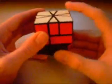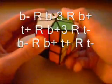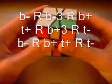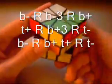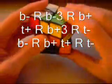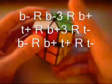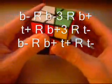B minus, R, B minus 3, R, B plus, T plus, R, T plus, R, T minus, B minus, R, B plus, T plus, R. And I think you can take it from here, and voila, you've solved square one.